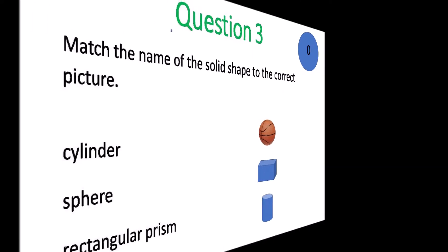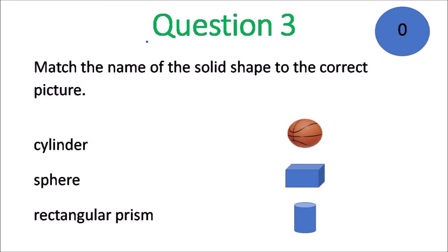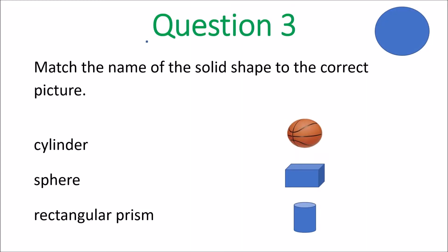Question 3. Match the name of the solid shape to the correct picture. Cylinder, sphere, rectangular prism.